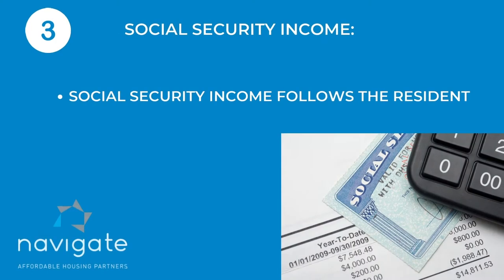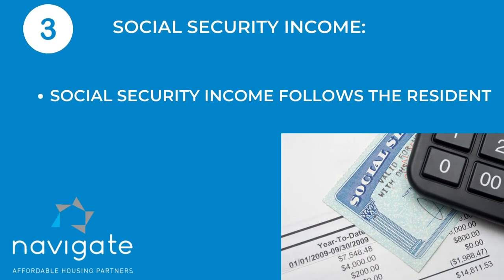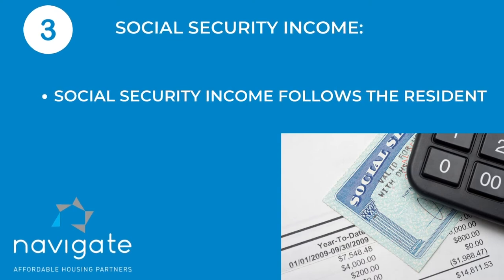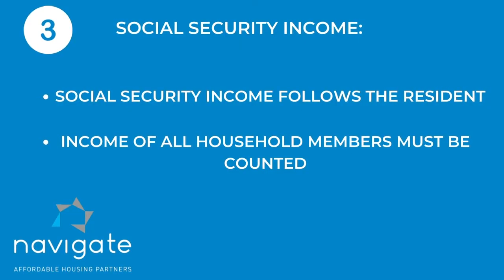Third and not least: Social Security income. The Social Security income follows the resident regardless of who the beneficiary is. We have an example this week where the manager says the Social Security recipient is receiving a check but her mother is getting it, and she lives with the grandparents. She's on the lease of the grandparents, but the management company since 2010 has not counted that Social Security income — that is a finding. You must count the income of all household members unless it's a child and you're doing the deduction because of the 480.